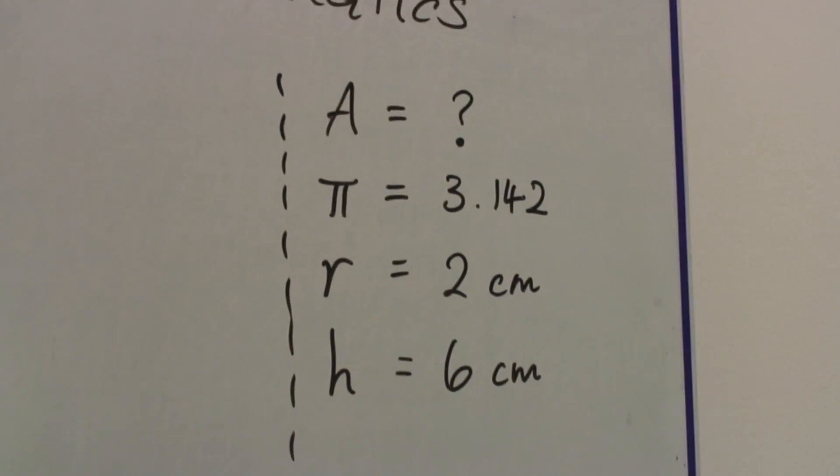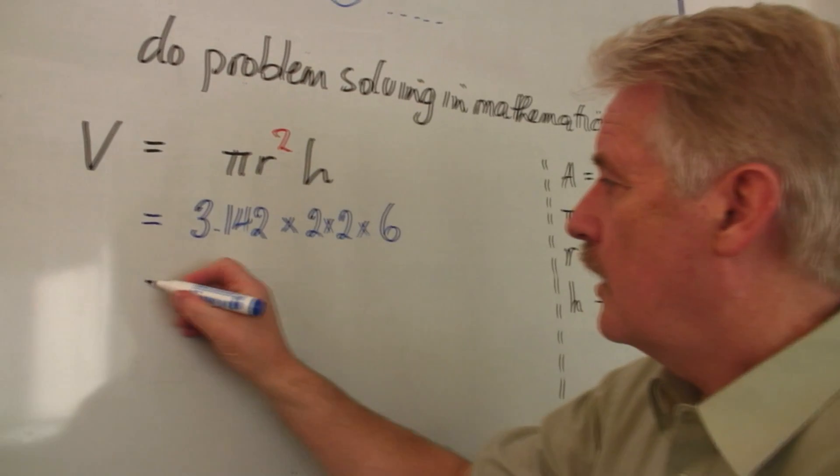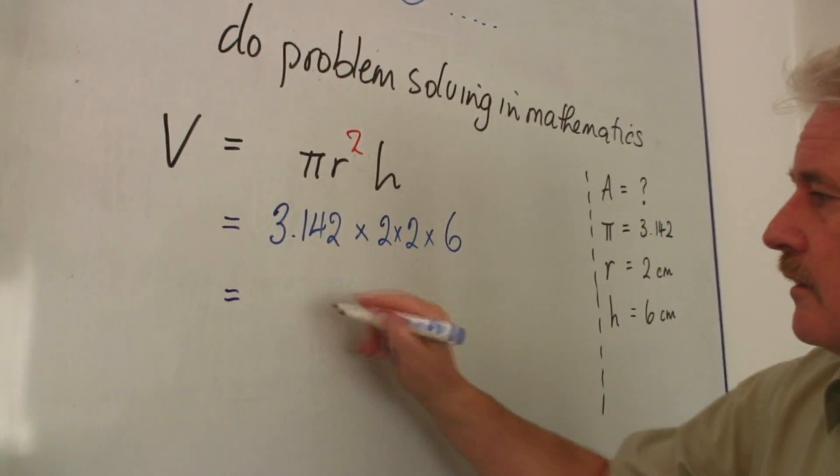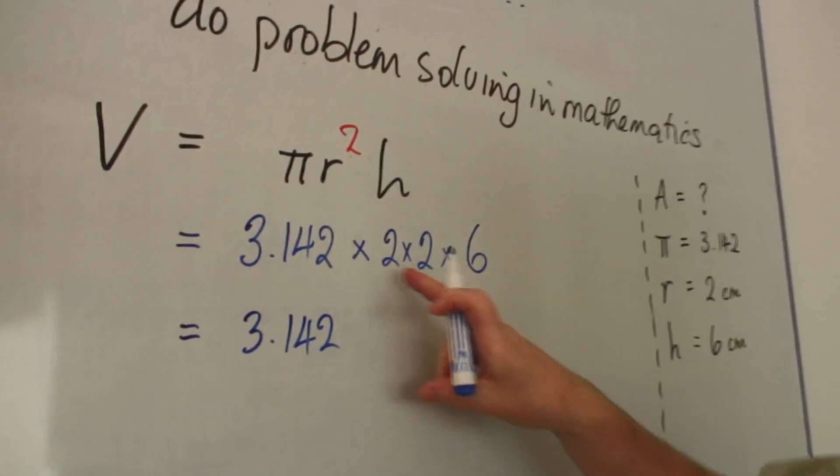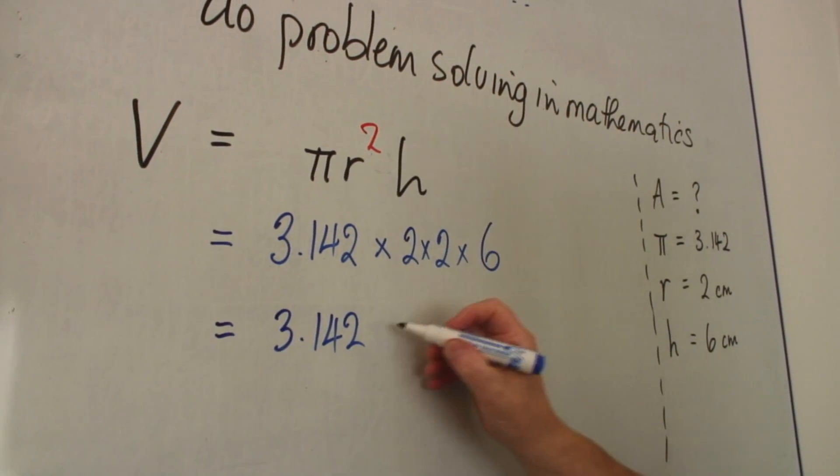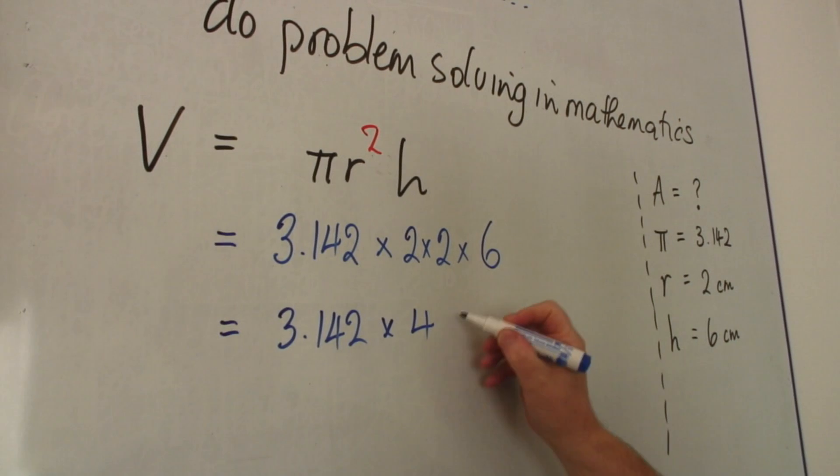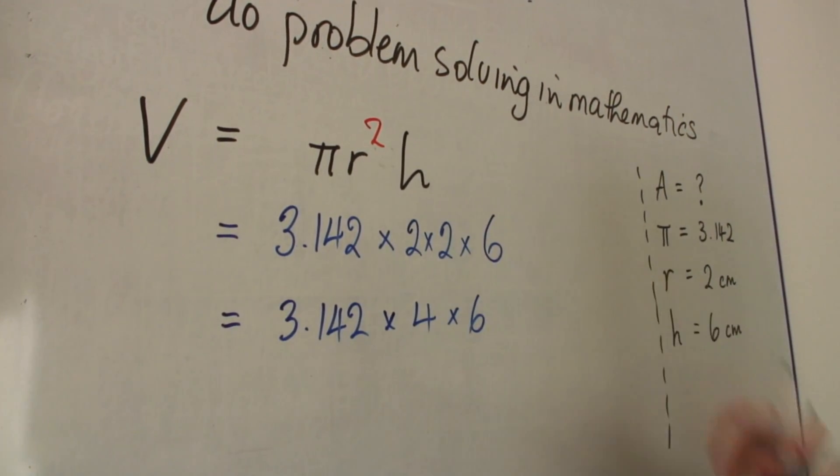So the next is to do the calculation. And obviously, 3.142, I'm not going to do anything with it at the moment. But 2 times 2, we know is 4, and 6 is on the end.